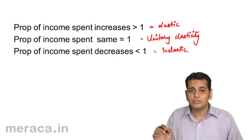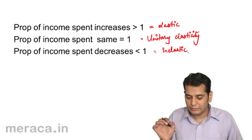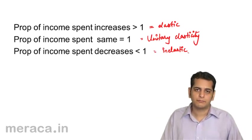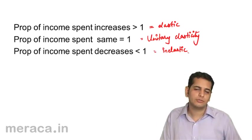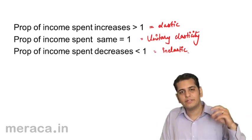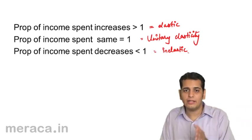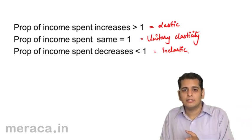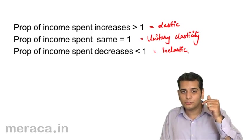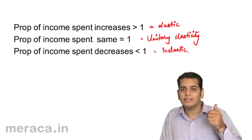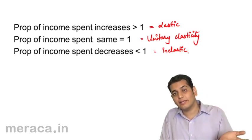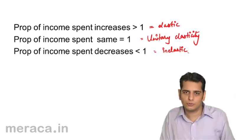This is perfectly similar to the total outlay method, where we have the same propositions. The only difference is that in total outlay method we look at expenditure, whereas in income elasticity we consider the proportionate increase in income and expenditure together, where income is increasing and expenditure is also increasing.